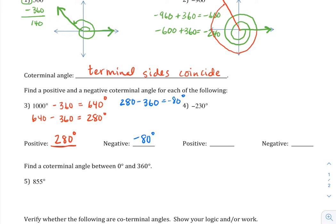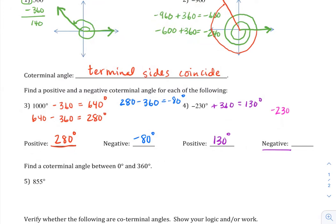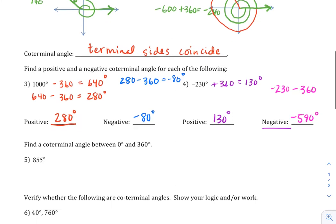Now this time, if you're starting with a negative angle and you need a positive coterminal angle, you're going to add 360. And that'll get me to 130 degrees. If I want another negative, I've got to subtract 360. So I'll start with that negative 230 and subtract another 360. And we'll get negative 590 degrees.